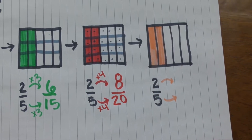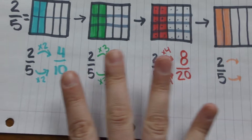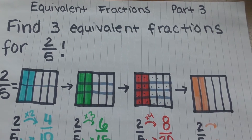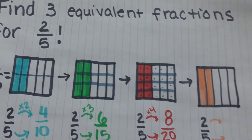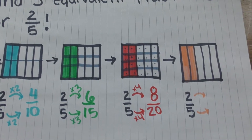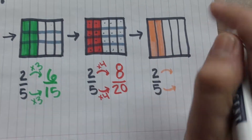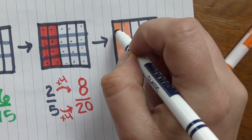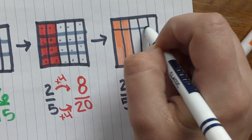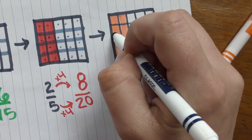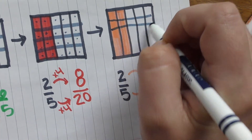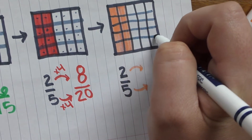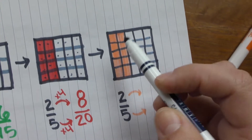We've got one more to do — well, we found three. I guess I should have put four equivalent fractions. Let's do a challenge. This one we're gonna cut it into five equal parts.